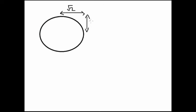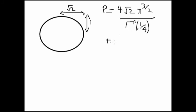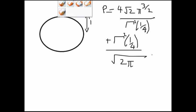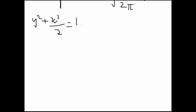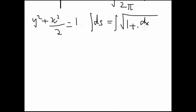Now I'm going to calculate the perimeter of an ellipse. The perimeter of an ellipse is quite difficult to calculate in general — we have elliptic integrals for that — but we can calculate the perimeter of this specific ellipse using the beta function, and show it equals 4√2 · π^(3/2) · [Γ(1/4)² + Γ(1/4)²] / √(2π). Placing it on axes, I'll calculate the arc length of one quarter and multiply by 4. The arc length formula gives ds = √(1 + (dx/dy)²) dy.